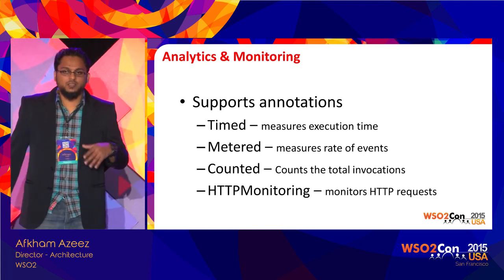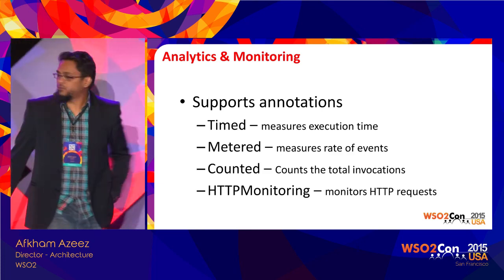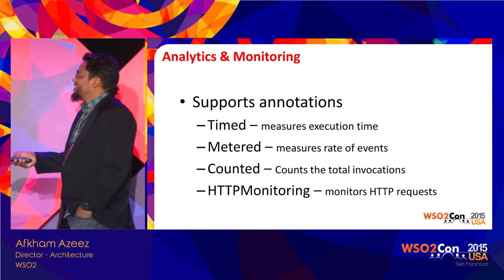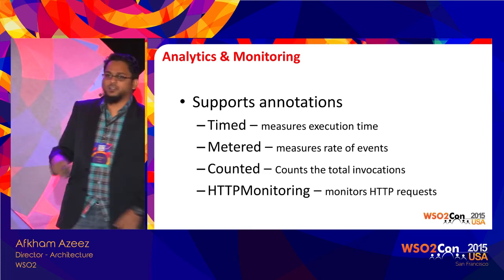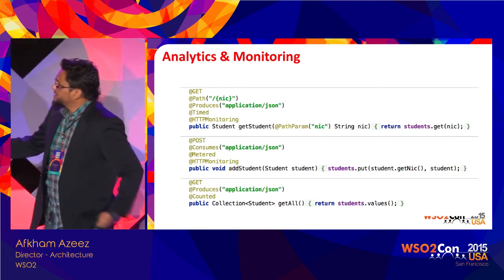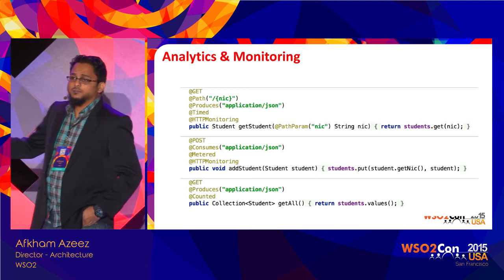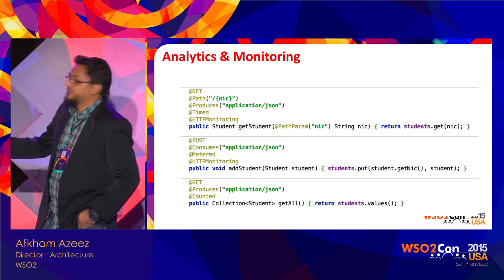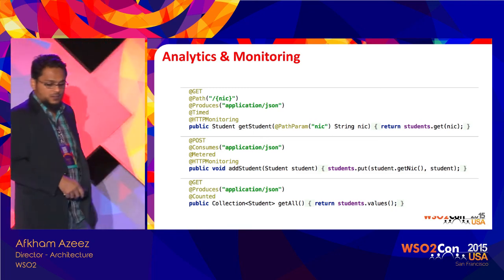Analytics and metrics: we currently support four types of annotations — timed, measured, counted, and metered. We are measuring different aspects of runtime execution. Along with your resource annotations, you simply add the analytics annotations and it takes care of doing the analytics for you. In order to enable this, your sample becomes a bit more complicated — earlier we were just deploying the service and starting it, now you have to add the analytics interceptor. The analytics interceptor enables capturing of analytics.